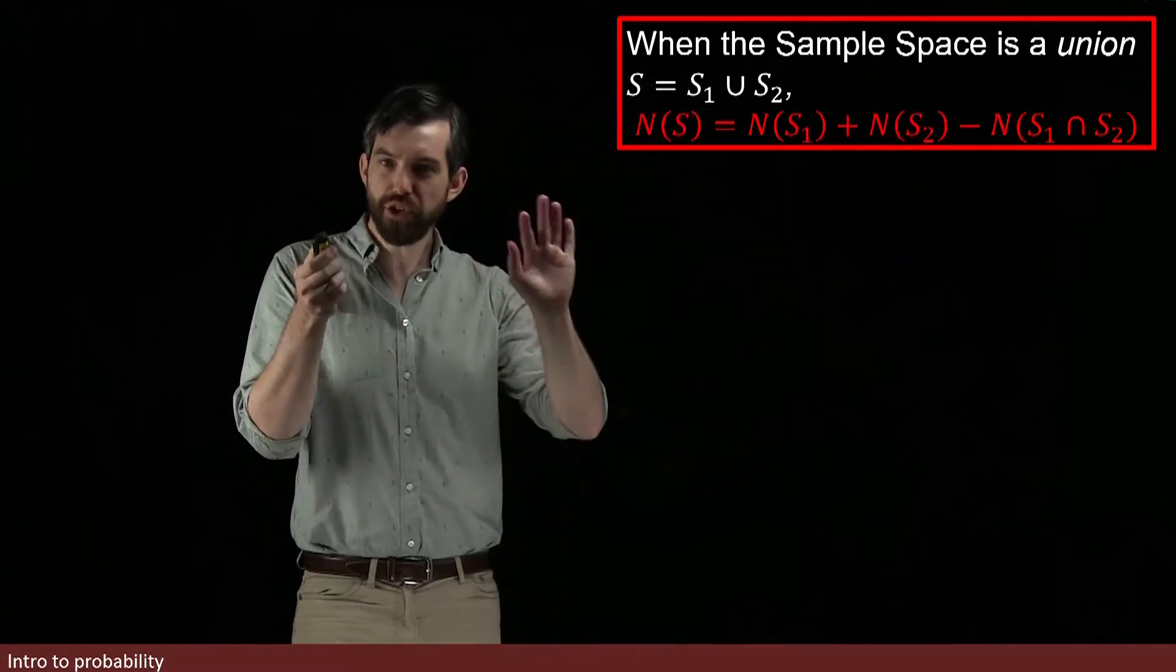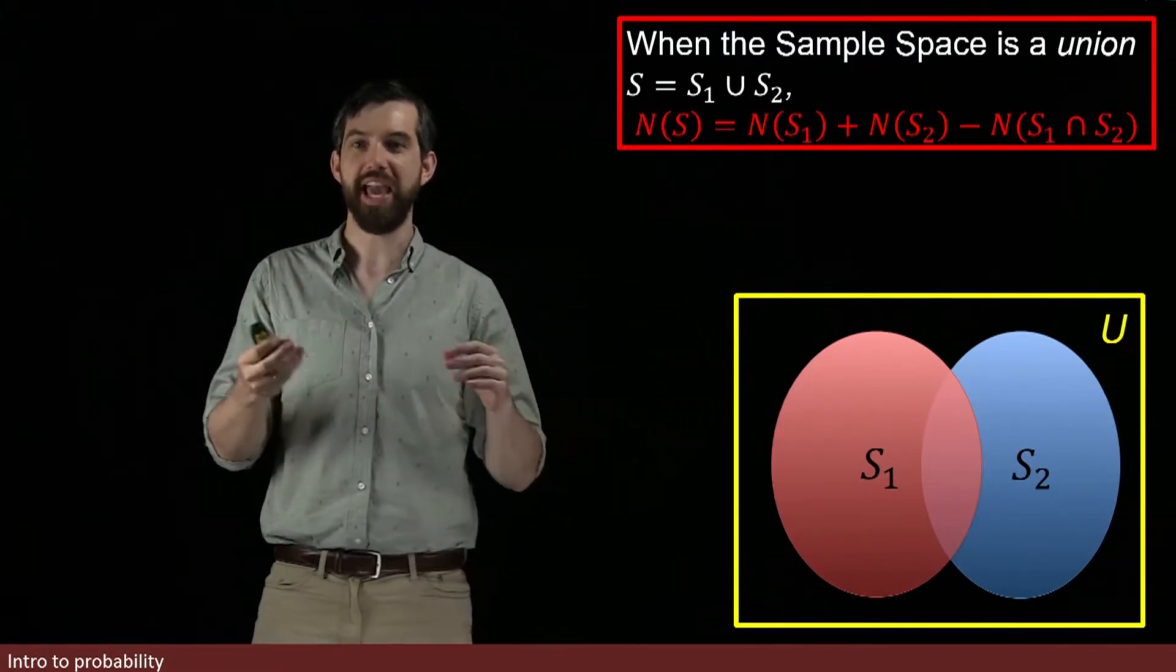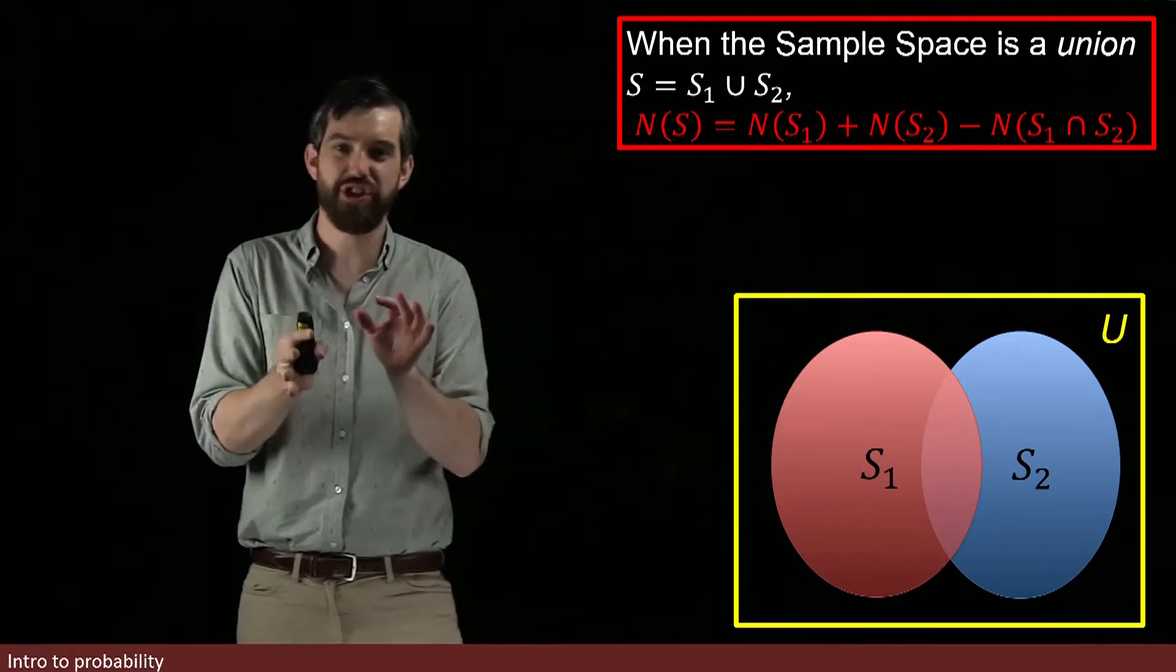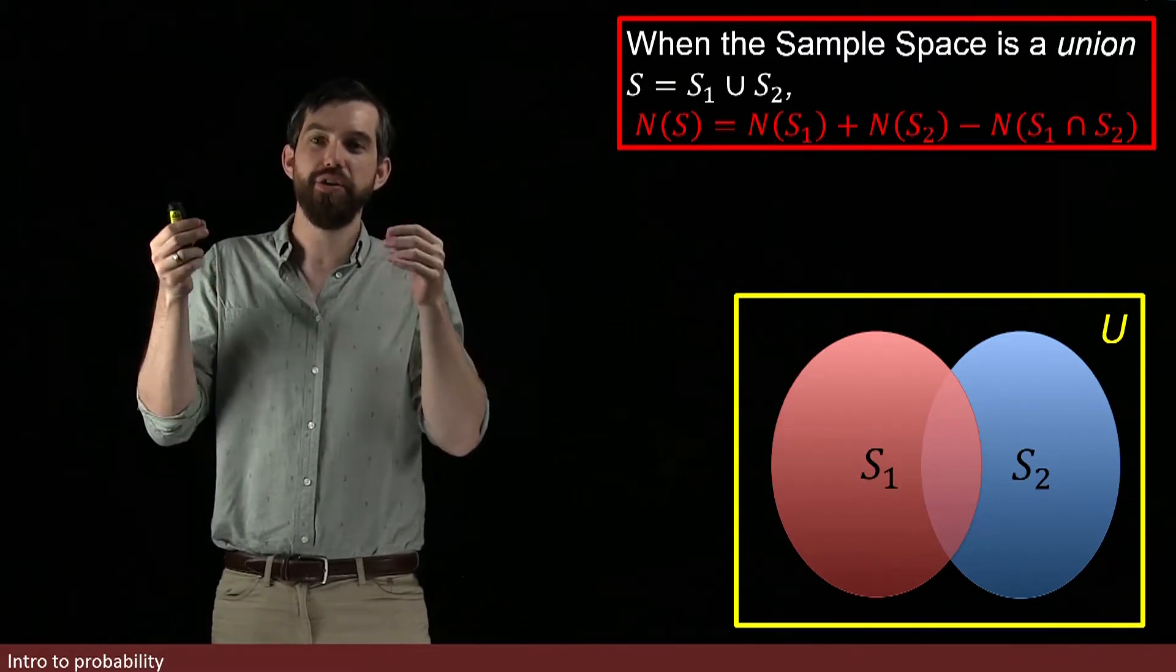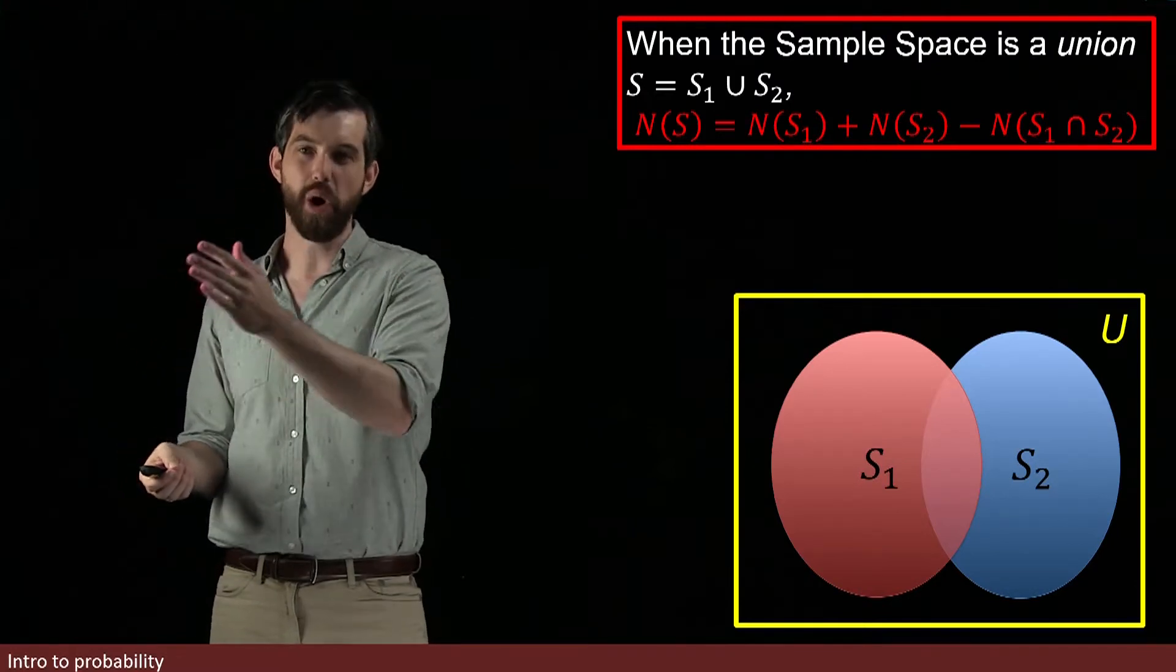We can visualize this idea in the normal old picture of a union where there is some non-trivial interaction in the middle. There's an intersection that is non-empty in the middle. There's elements that are in both S1 and S2.